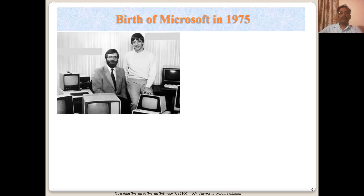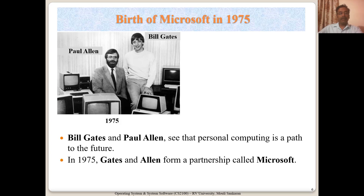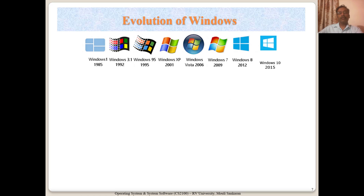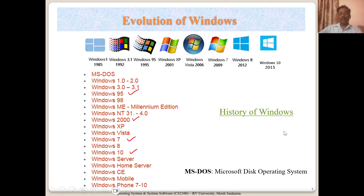Let us get into Windows — the birth of Windows. It was a company started by two people, Paul Allen and Bill Gates, in 1975. They started building PCs. In 1975 they started the company Microsoft, and released Windows 1.0 in 1985. Unfortunately, Paul Allen is no longer with us. These are the different logos of multiple Windows operating systems they came up with — very popular and being used across billions of users across the world. If you want to know more about how Windows evolved, please check the history of Windows link provided.